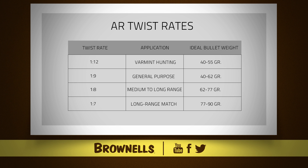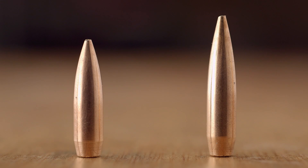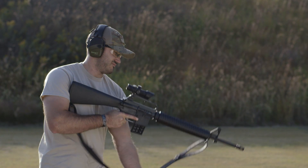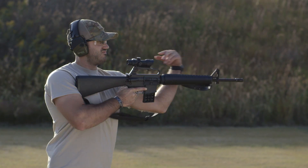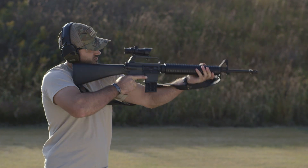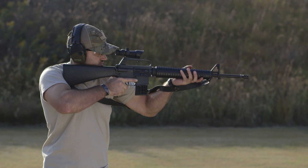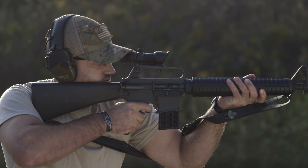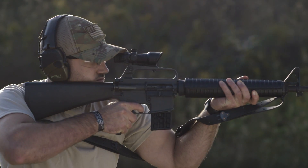The next step up, and the most common, would be the 1-in-9. This is a medium twist rate that works best with bullets around 62 grains and below. You can also shoot heavier bullets in the 69 to 70 grain range with fairly good accuracy, but the twist rate is marginal for the heavier bullets and accuracy will not always be the best, especially at ranges beyond 300 yards.